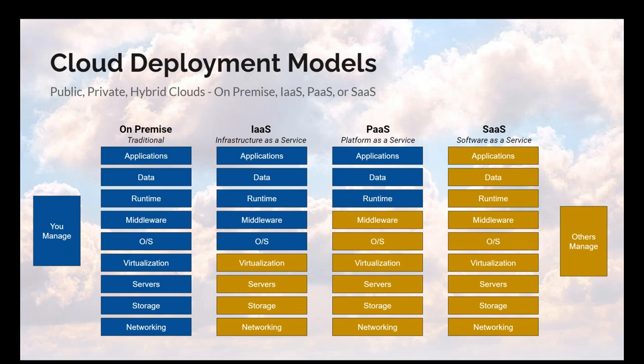On-premise is the traditional data storage solution where you manage everything. SaaS is the traditional cloud — software as a service where someone else manages everything for you. Platform as a service is more like a container in the cloud where you manage the data and applications. Infrastructure as a service is essentially where you're getting a virtual machine in the cloud, where you manage everything on top of the platform.